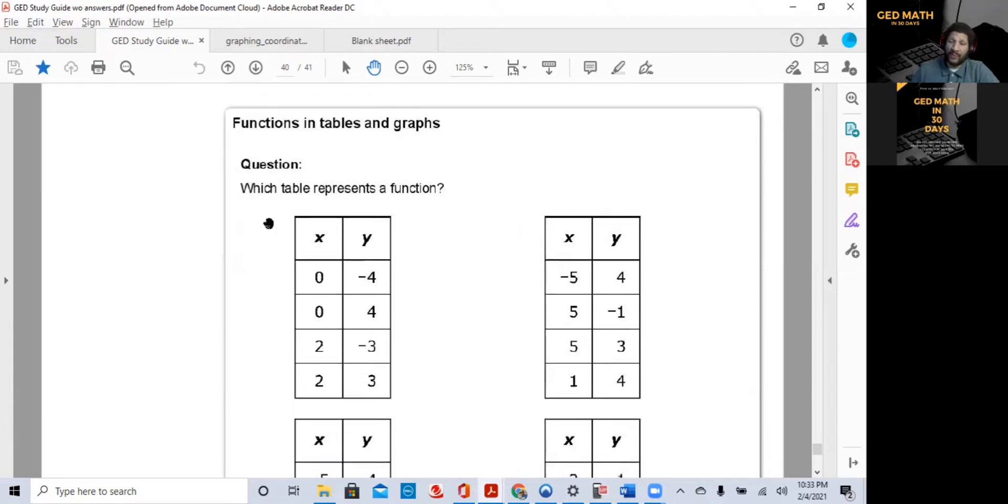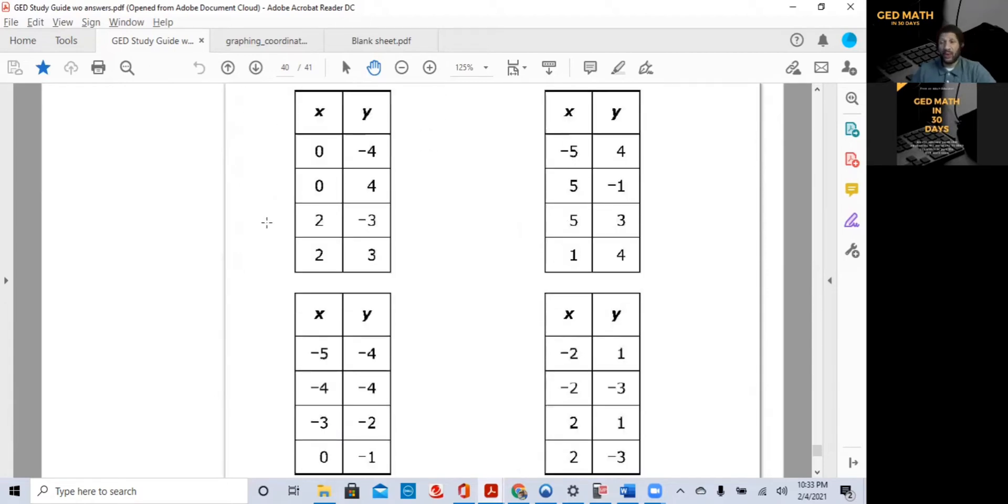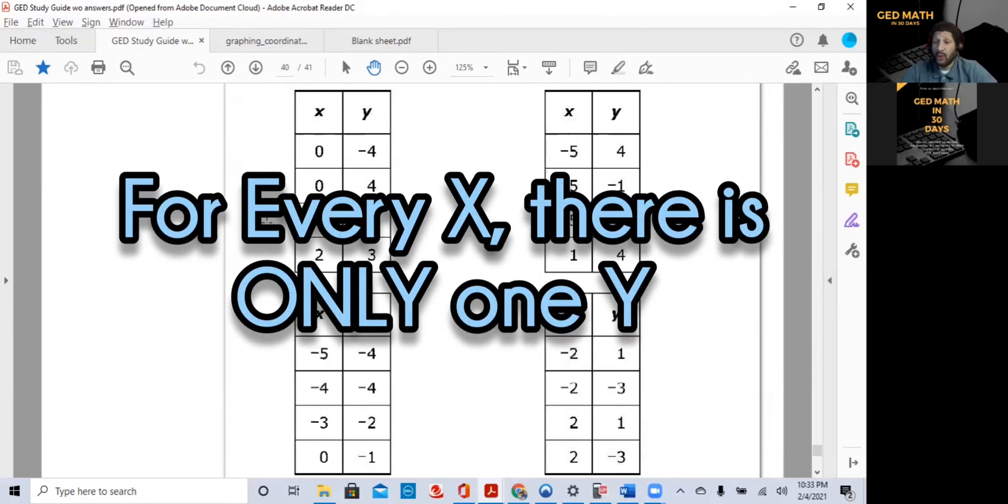It said, which table represents a function. So, the one thing you want to remember is that for every x, there is only one y. In some classes, they also teach you the vertical line test. If you draw a vertical line, you should only be able to pass through a function once to make it valid. But this is a table, so we can't tell, because we don't have a graph. But what you want to remember is for every x, there is only one y. So, let's look at these four tables.